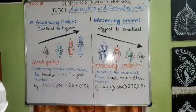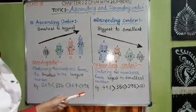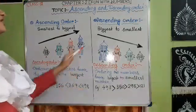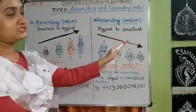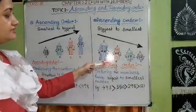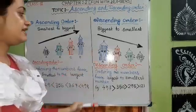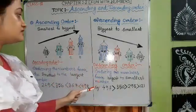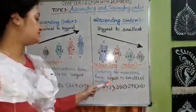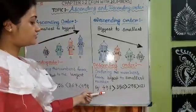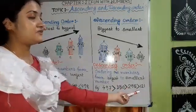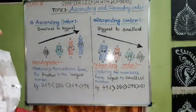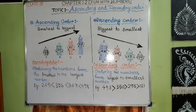What is descending order? Descending order is the opposite of ascending order — it means arranging from biggest to smallest. I have arranged the same pencils in descending order: first the longest one, D, then C, then B, then A. When we order numbers from largest to smallest, it is called descending order. For example: 497, 350, 295, 121 — these numbers are in descending order. So ascending order means smallest to biggest, and descending order means biggest to smallest.